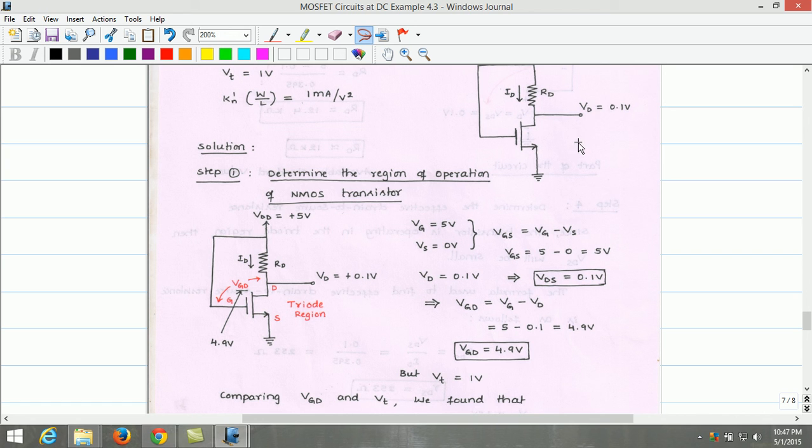VD equals VDS equals 0.1 volt. VG and VGS are the same since source is at ground potential. From this we can easily estimate VGD.